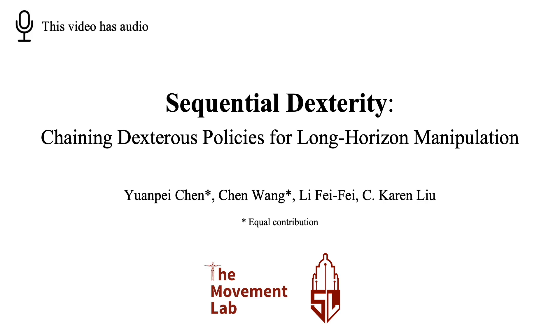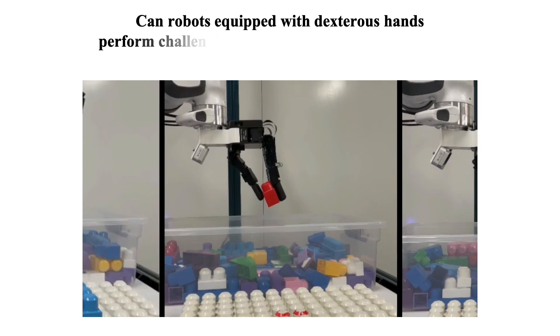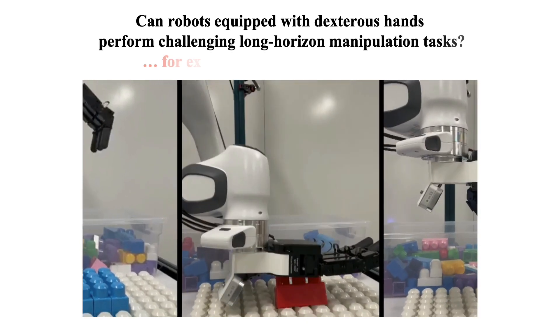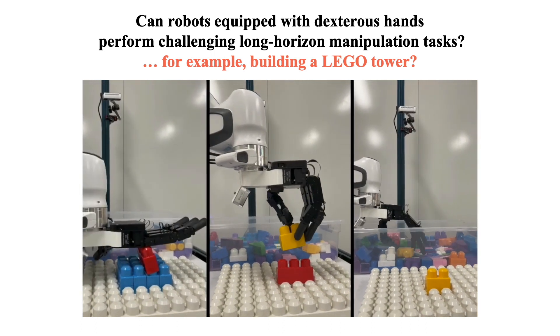This video introduces the project Sequential Dexterity: Chaining Dexterous Policy for Long Horizon Manipulation. How can we enable robots equipped with dexterous hands to perform challenging long horizon manipulation tasks, for example, building a LEGO tower from a pile of blocks?